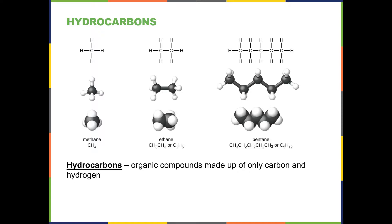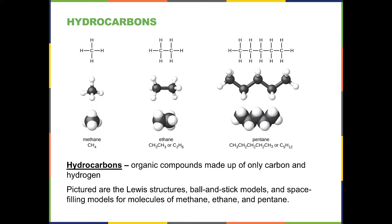Hydrocarbons can be drawn or represented in several different ways. The top is a line drawing type model, also called a Lewis structure. The second is the ball and stick drawing, and the third is called a space-filling model. We will be using the top method — the Lewis or line structure — along with a couple of other methods I'll show you in a moment.